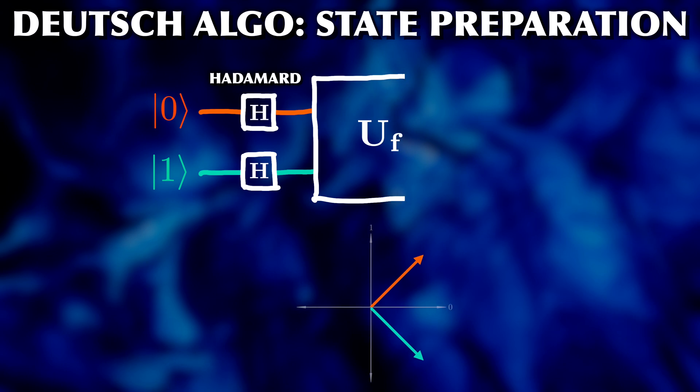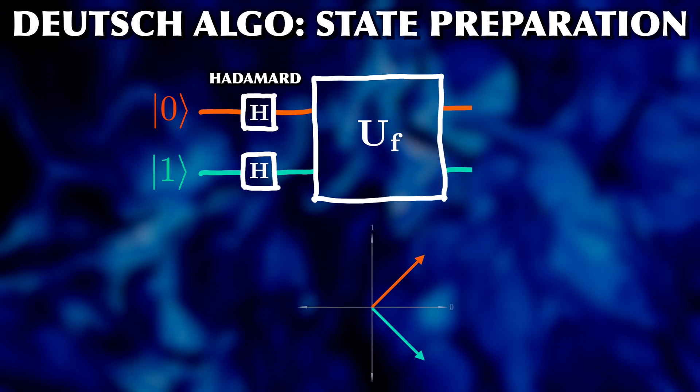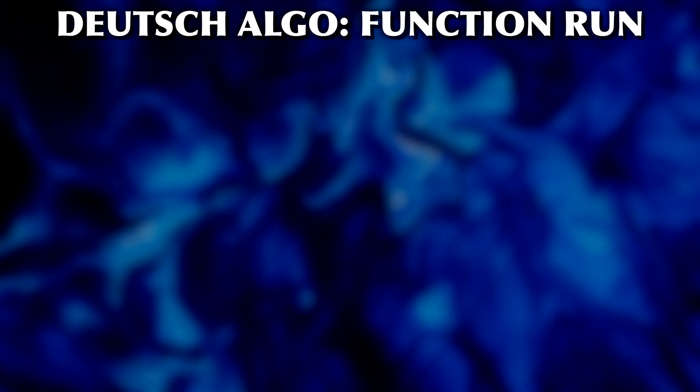What happens to the state vectors in the Uf gate depends on what f does. So let's look at what happens in all cases a to d. After doing the math, we find the following results.